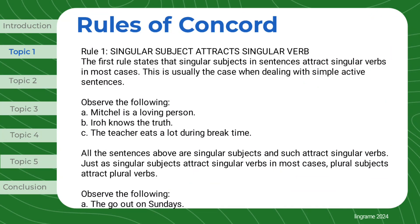Rules of Concord. Rule 1: Singular subject attracts singular verb. The first rule states that singular subjects in sentences attract singular verbs in most cases. This is usually the case when dealing with simple active sentences. Observe the following: 'Mitchell is a loving person.' 'Ion knows the truth.' 'The teacher eats a lot during break time.' All the sentences above have singular subjects and as such attract singular verbs.